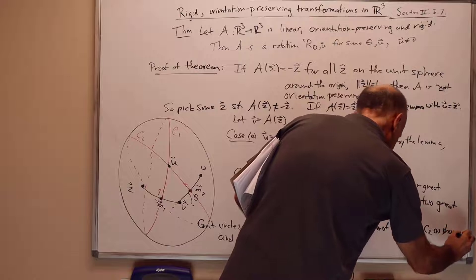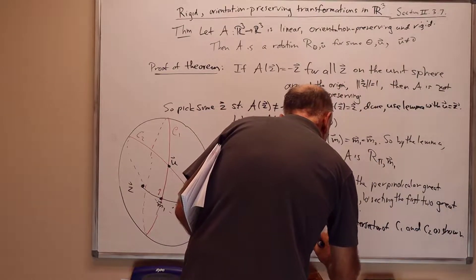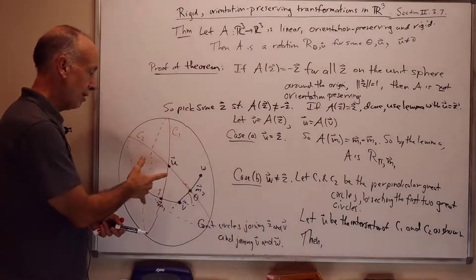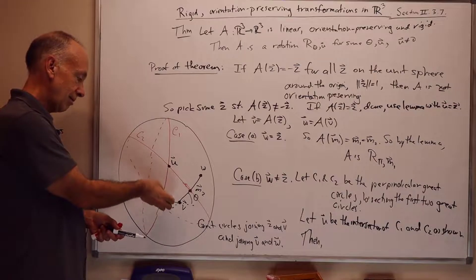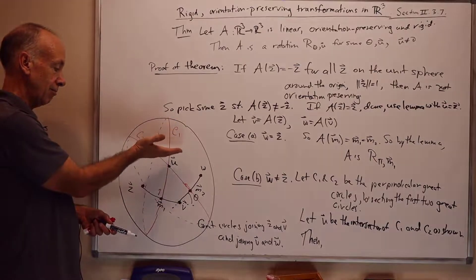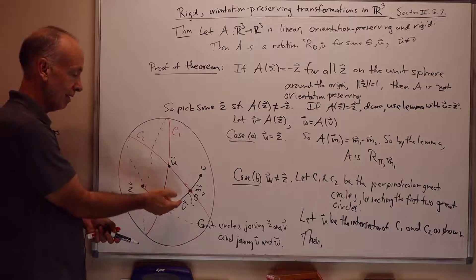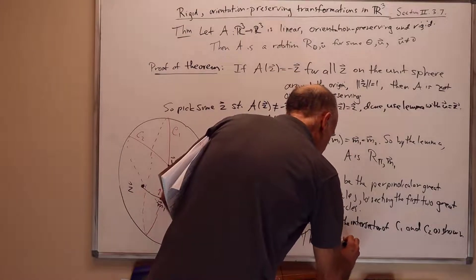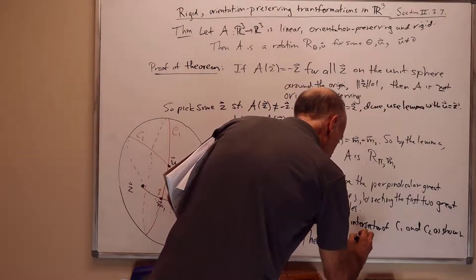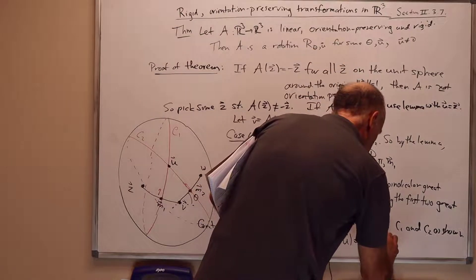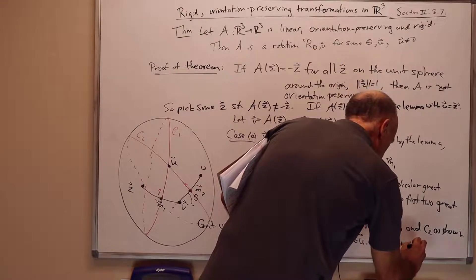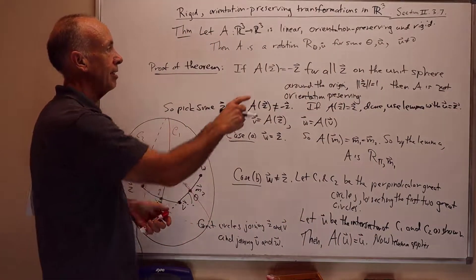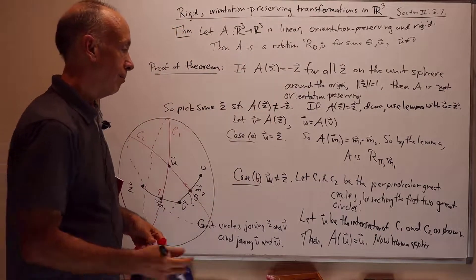By rigidity and orientation-preserving, c1 is mapped to c2, and the upper part of c1 is mapped to the upper part of c2. So then we have A of u equals u, and the lemma applies again. The lemma says that with a fixed point u, A has the form R_theta_u. That proves the theorem. Just as in R2, this means every rigid orientation-preserving map in R3 can be formed as a composition of translations and rotations of the form R_theta_u for some axis u passing through the origin.